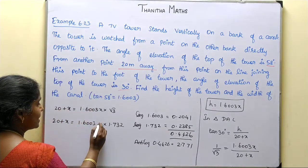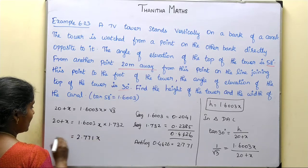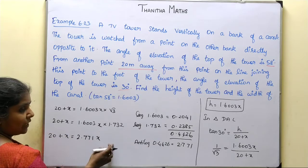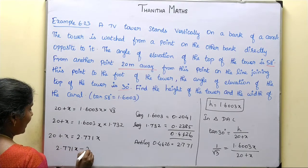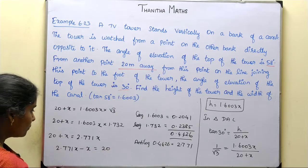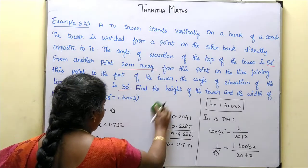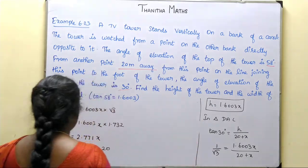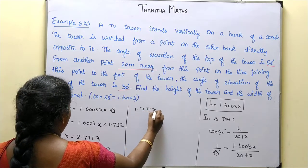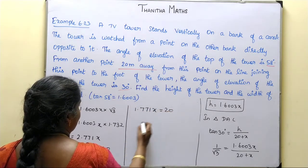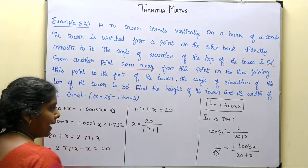So the equation becomes 2.771x equals 20 plus x. Subtracting x from both sides: 2.771x minus x equals 20, which gives 1.771x equals 20. Therefore x equals 20 divided by 1.771.